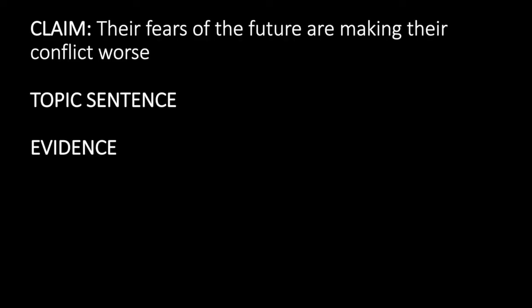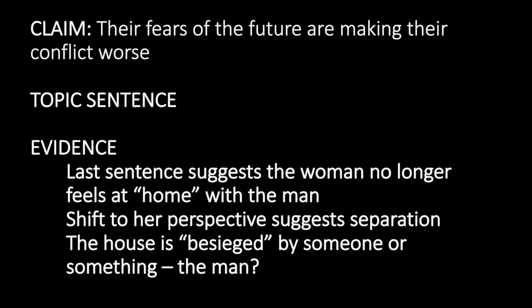For the last claim, their fears of the future are making their conflict worse. Maybe the last sentence suggests that the woman no longer feels at home with the man, suggesting she's losing her sense of home in the middle of this conflict. The last sentence also shifts to her perspective to suggest that her point of view is very separate from the man's point of view. There is an increasing separation between them. And last, maybe the house is described as besieged by someone or something. That could be the man. Not only have they been in conflict for a while, but the man now seems to be like someone even attacking the home. As you explain these pieces of evidence, you're explaining how the frightening future is intensifying the woman and the man's conflict.